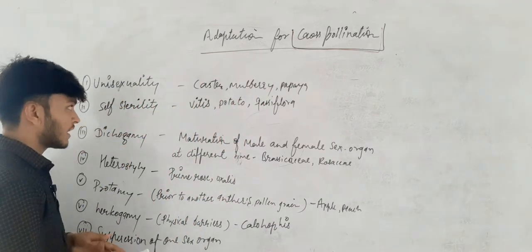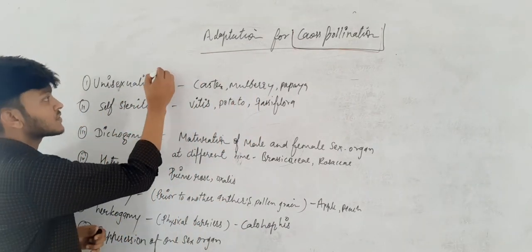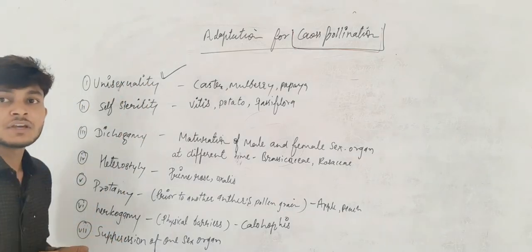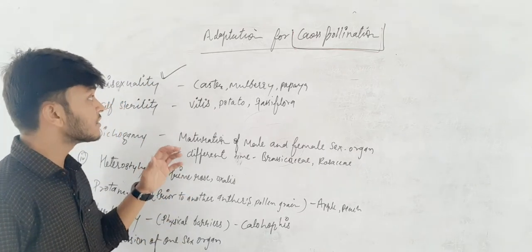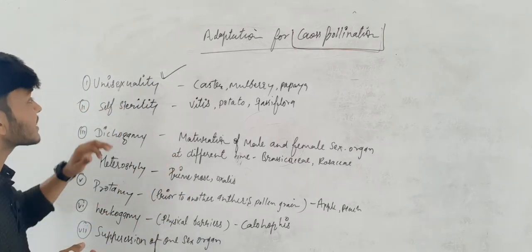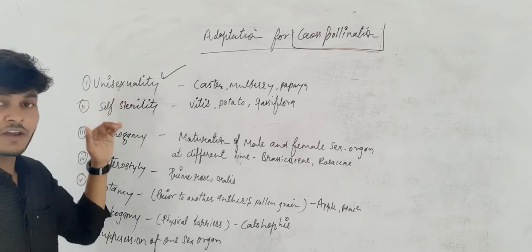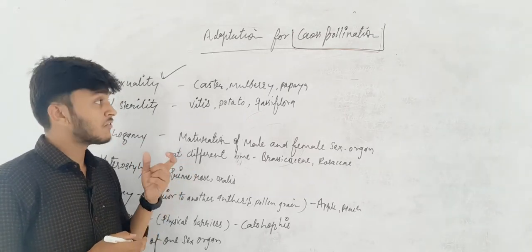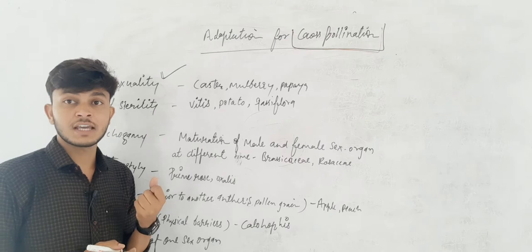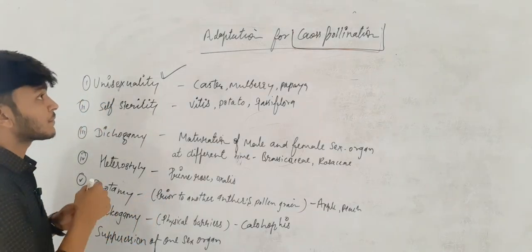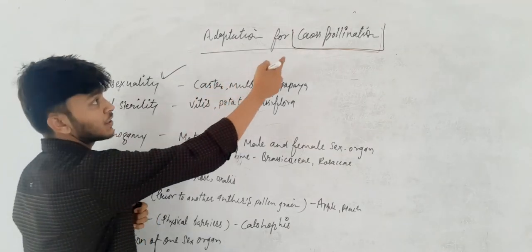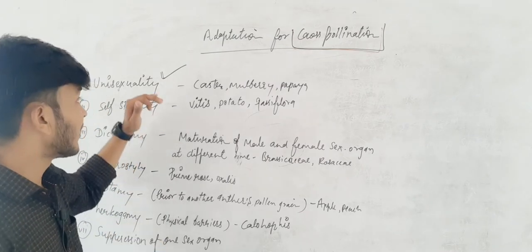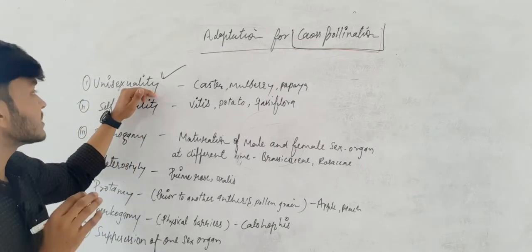Number one is unisexuality. Unisexuality means that the flower is unisexual — the flower and plant should be unisexual. The flower should have one sex organ. In that situation, we will not be able to see self-pollination, so cross-pollination occurs. The flower should exhibit unisexuality.